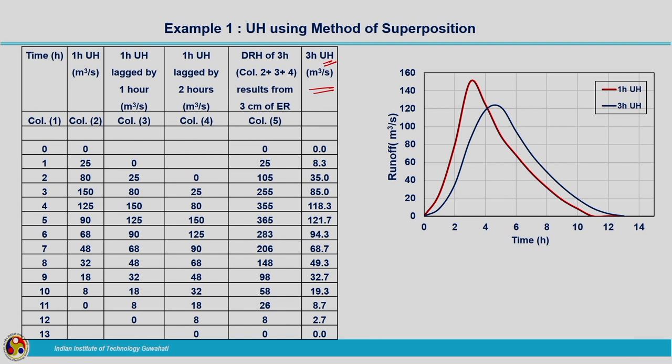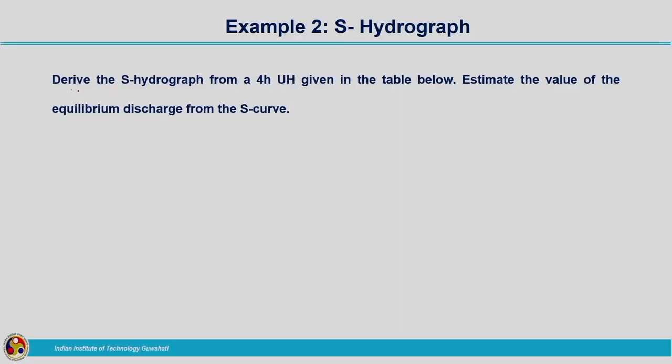Here we have the plot showing the 1-hour unit hydrograph and the 3-hour unit hydrograph. The 1-hour unit hydrograph has a high peak and the peak is attained very fast, while the 3-hour unit hydrograph produces a peak after a certain time compared to the 1-hour unit hydrograph. Now let us move on to the second example on S hydrograph. While explaining the S hydrograph concepts we discussed the theory; now let us solve one example so it will be more clear.